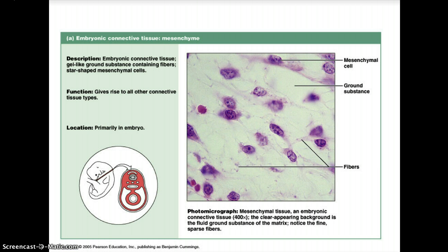Embryonic connective tissue, or mesenchyme, is described as a gel-like ground substance containing fibers with star-shaped mesenchyme cells. Its function is to give rise to other connective tissue types, and its location is primarily in the embryo. In the photomicrograph you can see the mesenchyme cell, the ground substance, and the fibers.